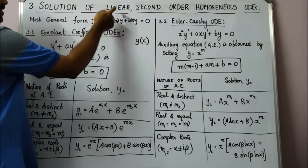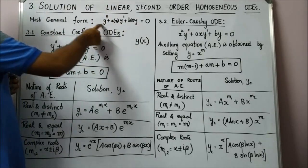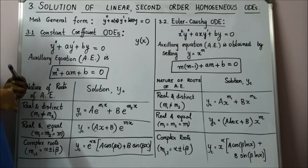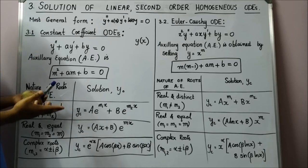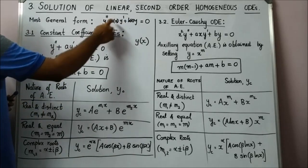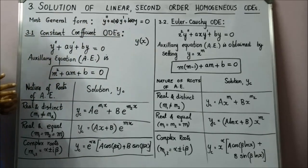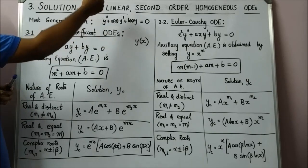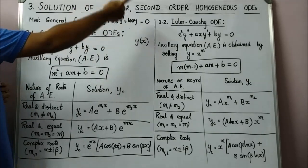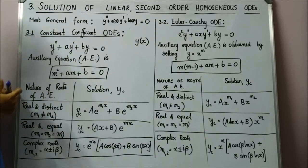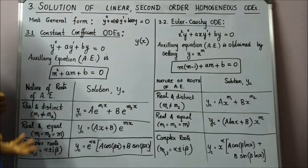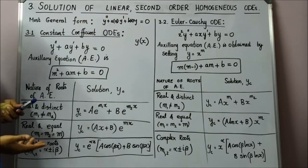For it to be linear, second order, and homogeneous, there are certain restrictions. Because it is linear, Y, Y prime, and Y double prime should have a degree of 1 — they should appear as themselves, not in composites. Their coefficients can only be functions of X and should not contain Y. And because it is homogeneous, every term has to have Y or its derivatives.